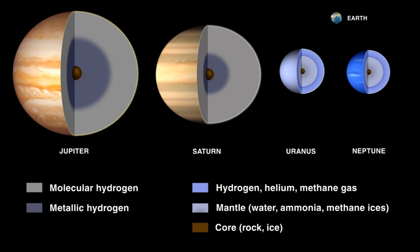The building blocks of materials are the chemical elements. These can be identified by their atomic number Z, which is the number of protons in the nucleus. An element can have more than one value for N, the number of neutrons in the nucleus. The sum of these is the mass number, which is roughly equal to the atomic mass. Atoms with the same atomic number but different neutron numbers are called isotopes. A given isotope is identified by a letter for the element preceded by a superscript for the mass number. For example, two common isotopes of chlorine are 35Cl and 37Cl.